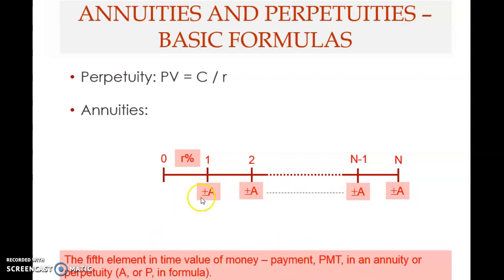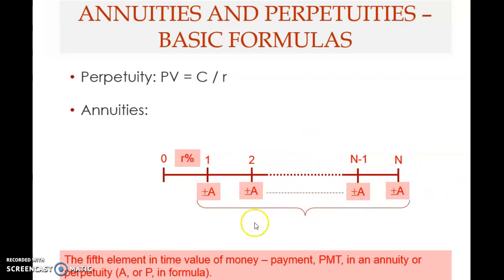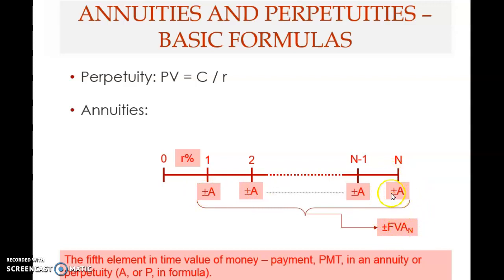We use A for annuity and P for perpetuity. With this fifth element, we replace present value with payment. The sum — or value — of all these cash flows at a future point in time is called the future value of annuity. Specifically, just after the last payment at time n, what is the combined value of all these cash flows?